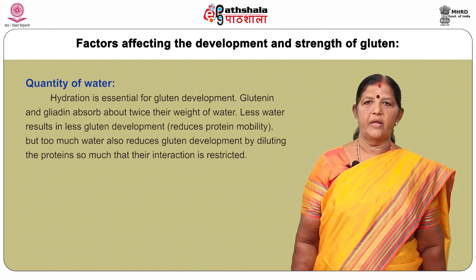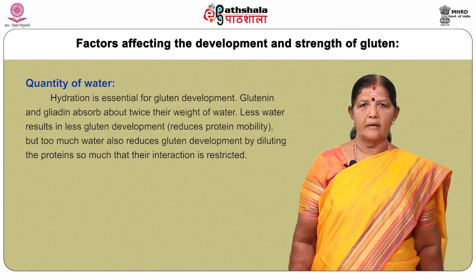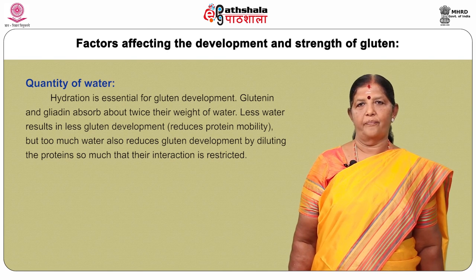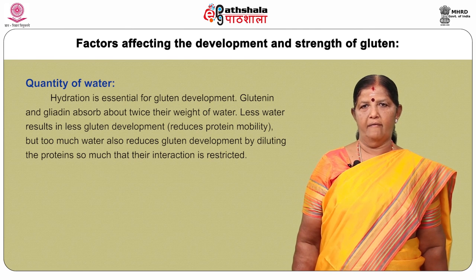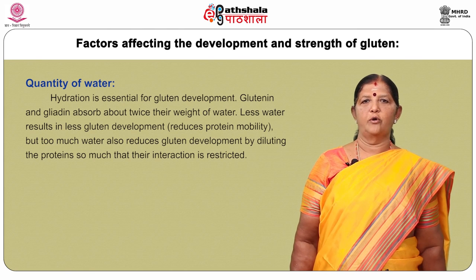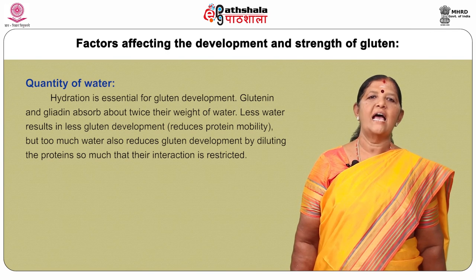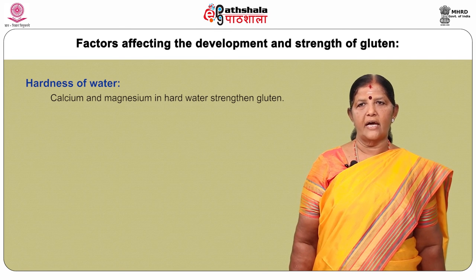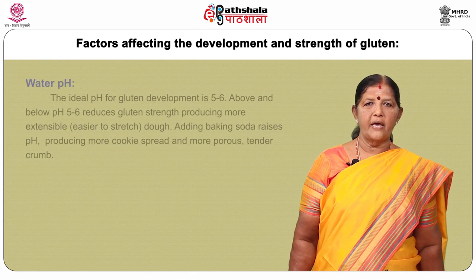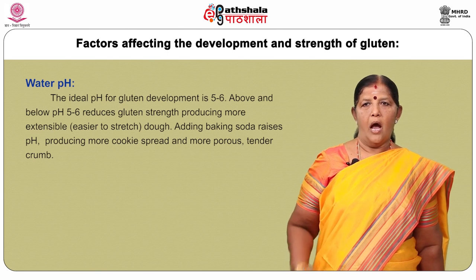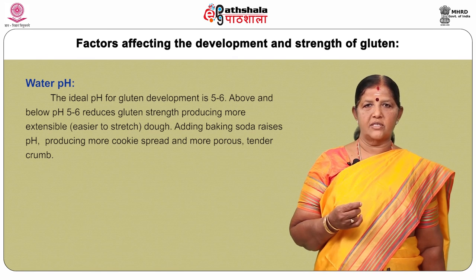Quantity of water: Hydration is essential for gluten development. Glutenin and gliadin absorb about twice their weight in water. Less water results in less gluten development and reduces protein mobility. Too much water also reduces gluten development by diluting the proteins so that their interaction is restricted. Hardness of water: Calcium and magnesium in hard water strengthen gluten. Water pH: The ideal pH for gluten development is 5–6.